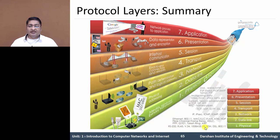The standards at Layer 1, Physical Layer, include RS-232, RS-45, etc. At Layer 2, the Data Link Layer standards include Ethernet, MAC, LAN, and ATM. This is the first layer of the TCP/IP model.